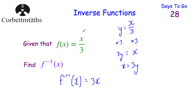So if our original function is x/3, the inverse function is 3x. Let's just check: if x = 15, then 15 ÷ 3 = 5, and then 3 × 5 = 15 again. That's the inverse function of x.